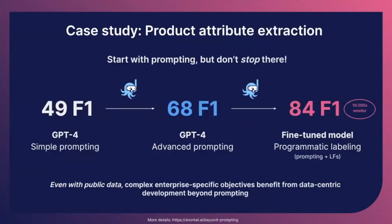Another case study is on product attribute extraction — from a catalog, extracting attributes like water-resistant or stain-resistant. We started by prompting GPT-4 out of the box, which gave 50 F1. Advanced prompting with techniques like 'you are an expert, think step-by-step' improved it to 68 F1 after dozens of hours of prompt engineering. The next step was fine-tuning a much smaller model — a 10,000x smaller model — which pushed performance up to 84 F1.